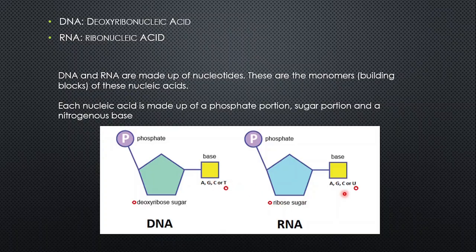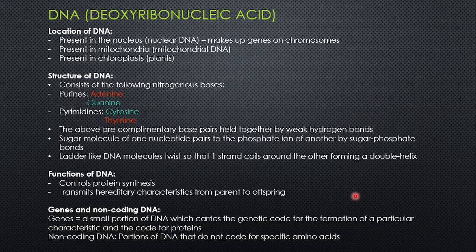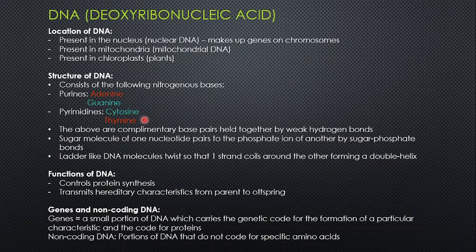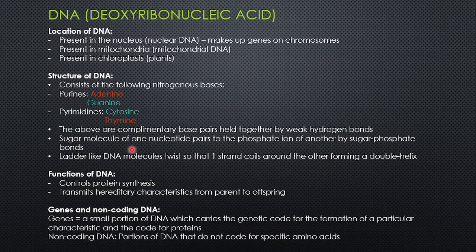DNA has thymine and RNA has uracil. The location of DNA: we find it in the nucleus, in mitochondria, and in chloroplasts in plants. The structure of DNA is made up of four nitrogenous bases, split into purines and pyrimidines. Adenine and thymine form complementary base pairs, and guanine and cytosine are complementary base pairs. These are held together by weak hydrogen bonds. The sugar molecule of one nucleotide pairs to the phosphate ion of another by sugar-phosphate bonds. This forms the ladder-like DNA molecule, which twists so that one strand coils around the other to form a double helix.